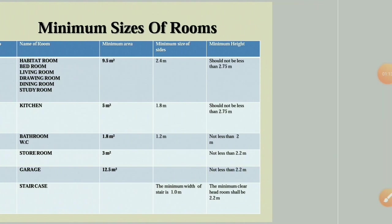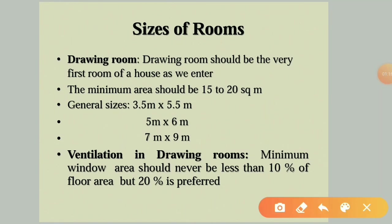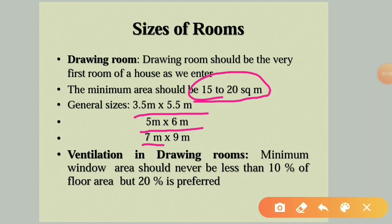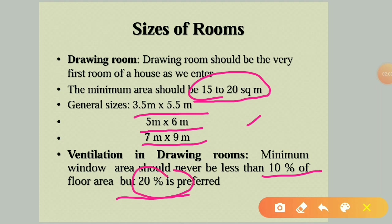For a drawing room or hall, the minimum area required is 10 sq.m, or 15 to 20 sq.m for a luxurious room. Common sizes are 3.5m×5.5m, 5m×6m, or 7m×9m. For ventilation, the minimum window area should not be less than 10 percent of the floor area, though 20 percent is preferred to ensure good lighting and ventilation.